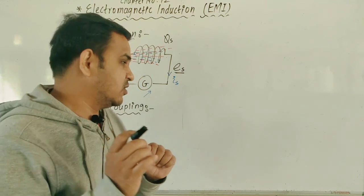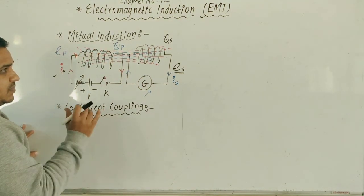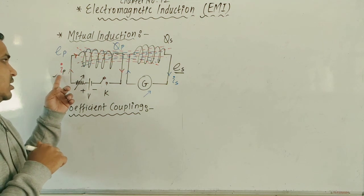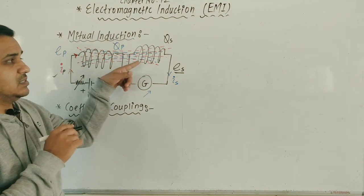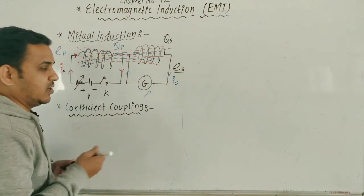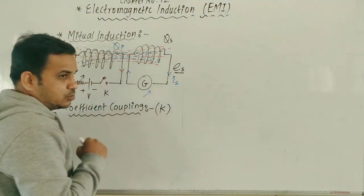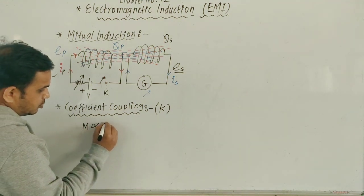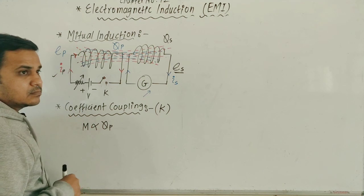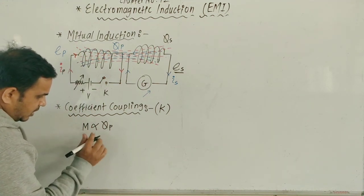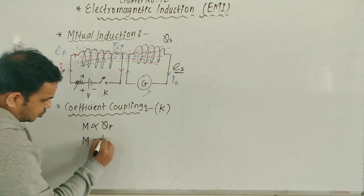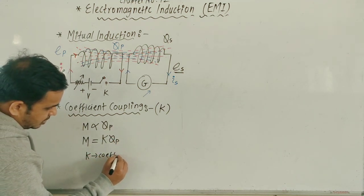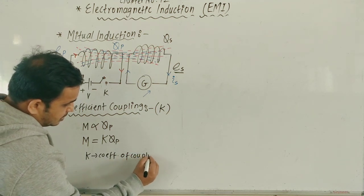Now let us understand what is the coefficient of coupling. It is the measure of how much flux is touching the secondary coil because of the change of current in the primary coil — how many lines go and touch the secondary. This measurement is called the coefficient of coupling, represented by capital K. So: M = K × Phi_P, where K is the coefficient of coupling.